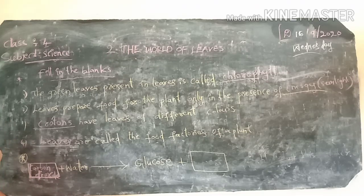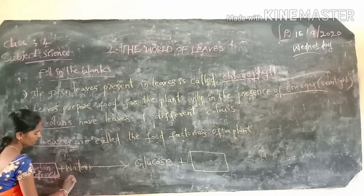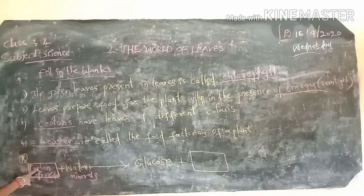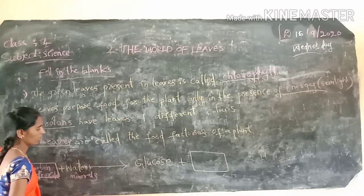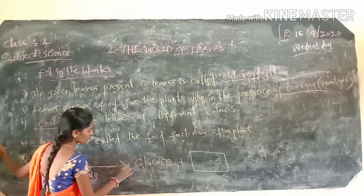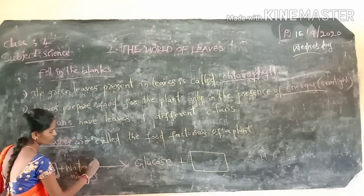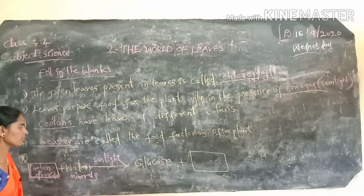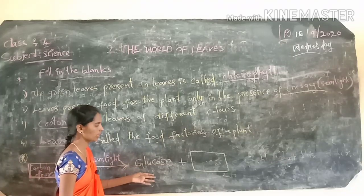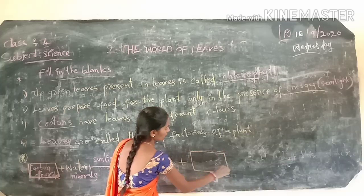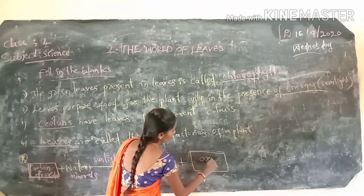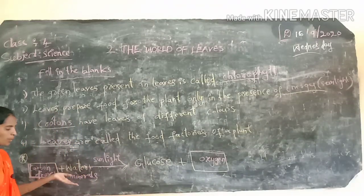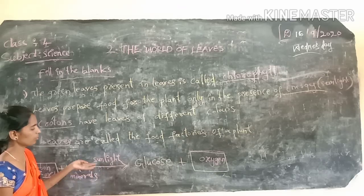Complete the missing parts for photosynthesis: carbon dioxide plus water plus minerals, in the presence of sunlight, gives rise to food — that is glucose — plus oxygen. So carbon dioxide and water and minerals in the presence of sunlight produce glucose and oxygen.